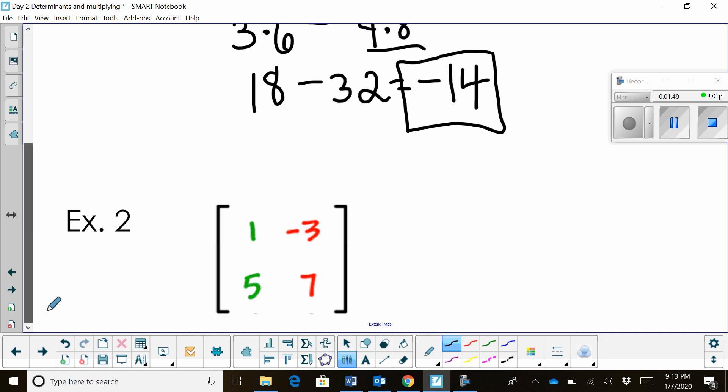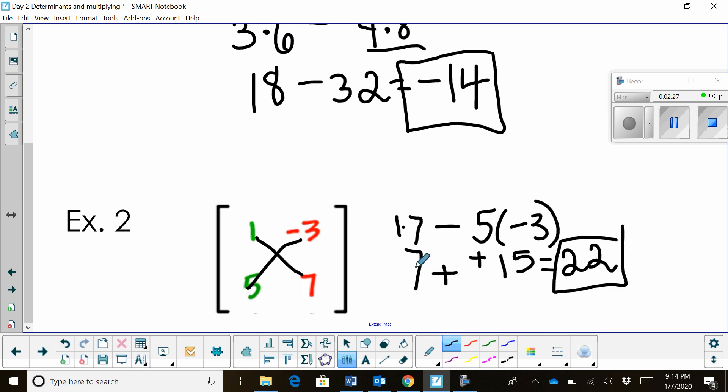We've got one more example down here so let's try this one. Okay, we're going to take the diagonal 1 times 7. So 1 times 7 is just 7. And we're going to subtract the product of 5 and negative 3. So 5 times negative 3, and we know 5 times negative 3 is negative 15. So 7 minus a negative 15. You have to be careful here because you have double negatives. You're going to end up adding those. So the answer is simply 22. And there's your determinant for the second example.